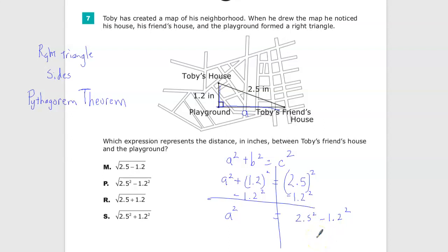So I end up with a squared is equal to 2.5 squared minus 1.2 squared. The last step here is to say, okay, so I have a squared, but I'm looking for a. What's the opposite of squaring something? Square root. So I need to take the square root of both sides.